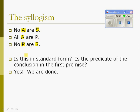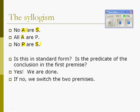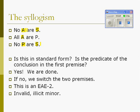Therefore, this syllogism — which is E, A, E, and it's figure three, because the position of the middle term is the subject in both premises — is E, A, E, figure three. The slide is wrong; it says figure two but it is in fact figure three. E, A, E, figure three, and it is invalid: illicit minor.